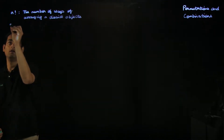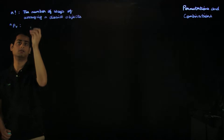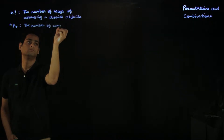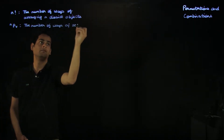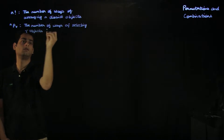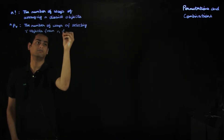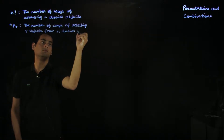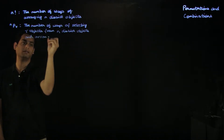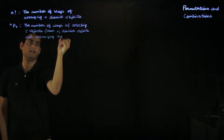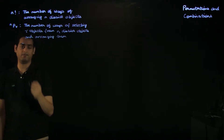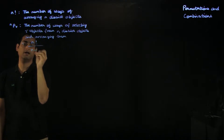We also looked at the concept of nPr, which is the number of ways of selecting r objects from n distinct objects and arranging them. So you first select r objects from n distinct objects, and then you arrange those r objects in a row. That is nPr, and this is a generalization of the concept of n factorial. It is given by n factorial divided by n minus r factorial.